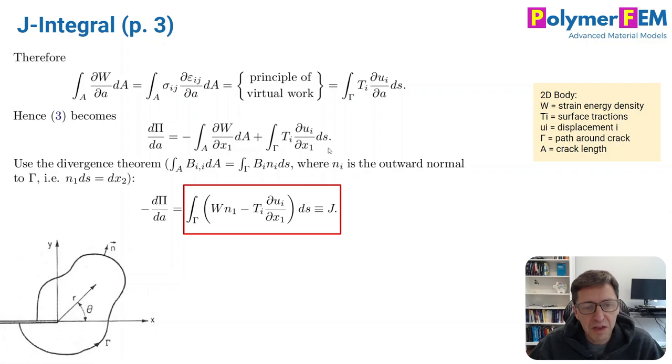So the partial derivative of potential energy with respect to crack length now becomes this equation here. It's a little bit inconvenient because it's an integral over the area and here's a term that's an integral over a path. So we're going to apply the divergence theorem, and then we can convert this from an area integral to a path integral and that gives us exactly the answer we're after.